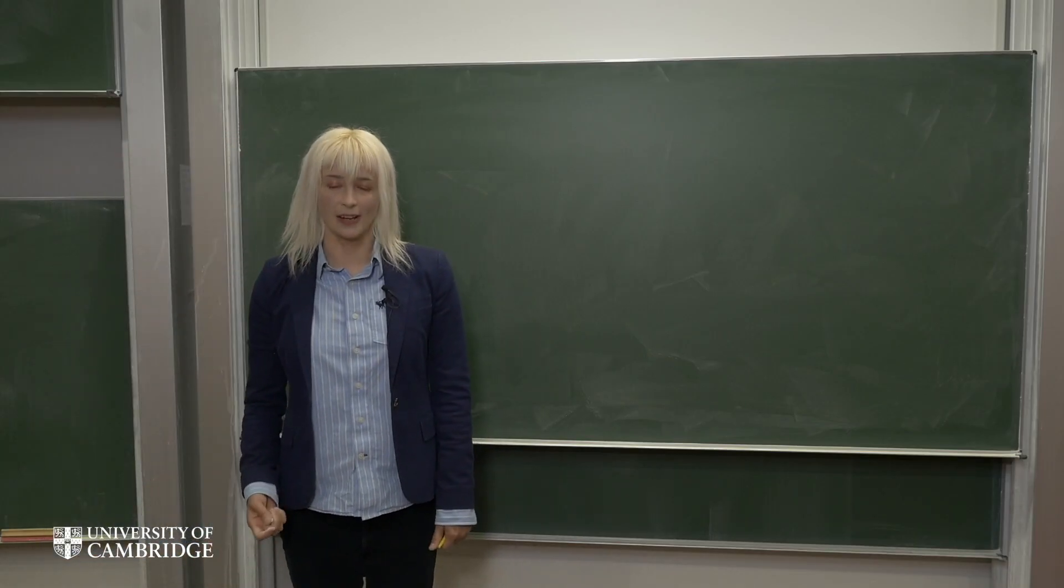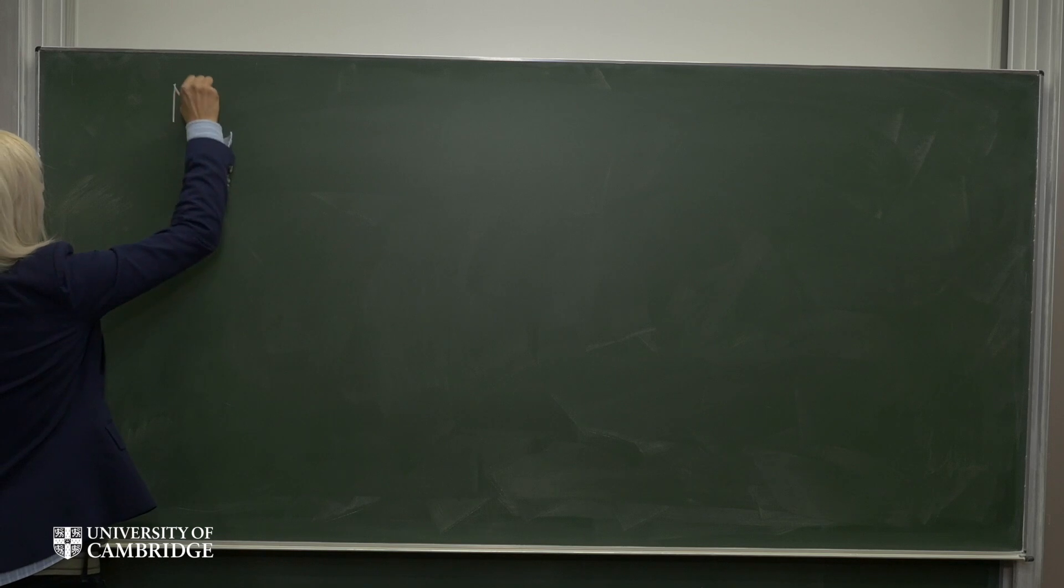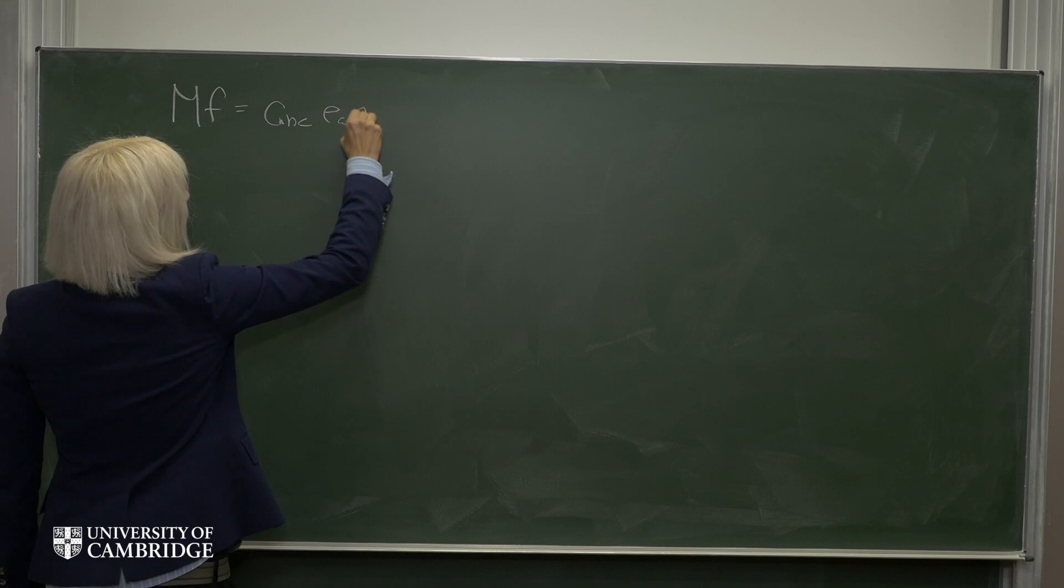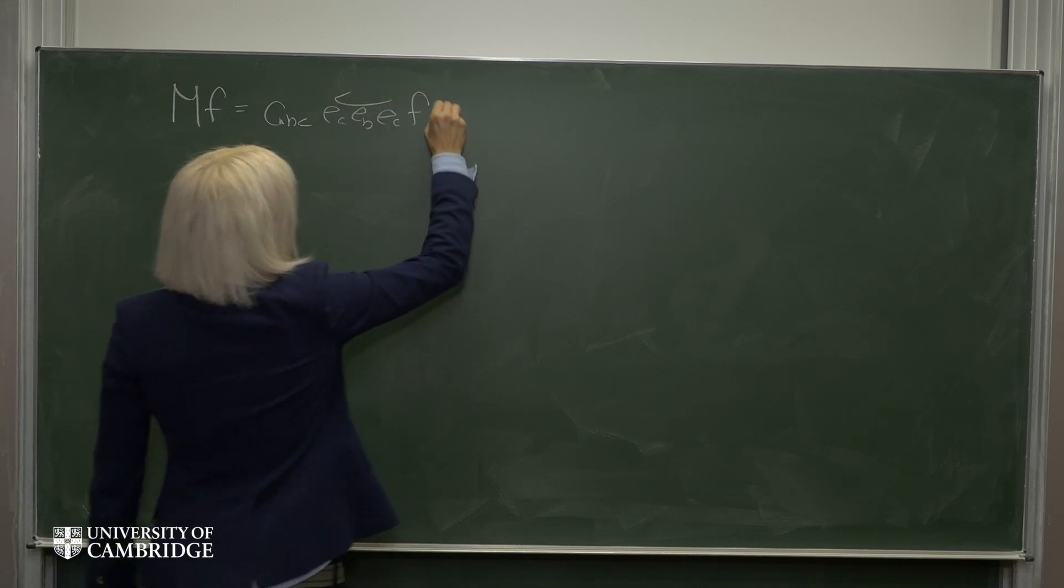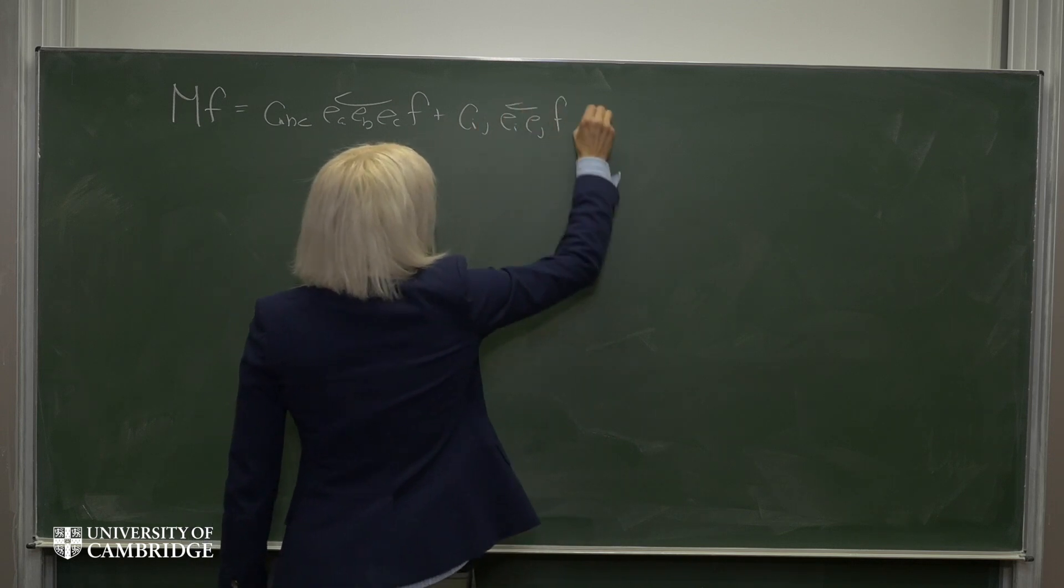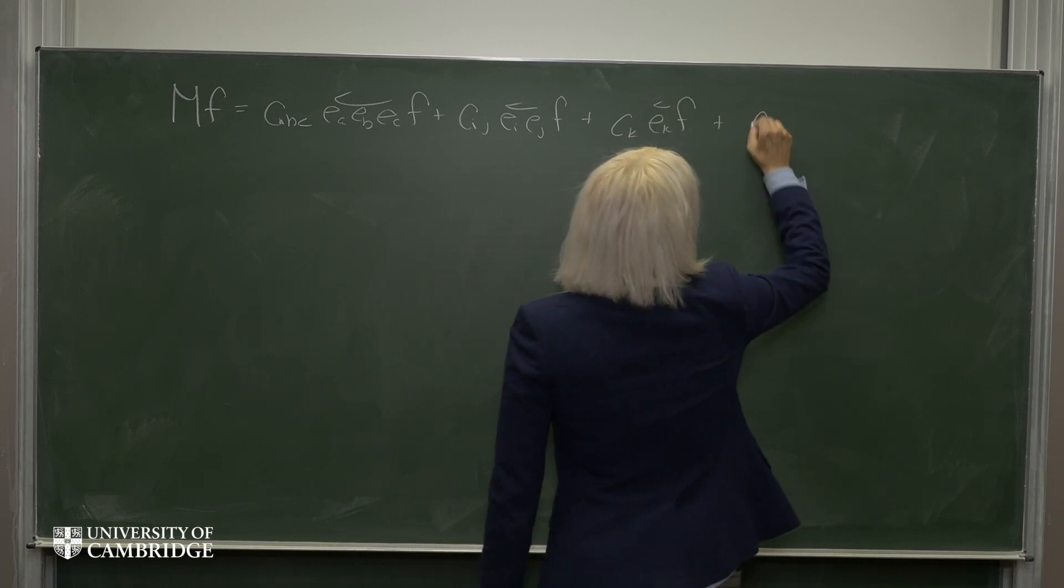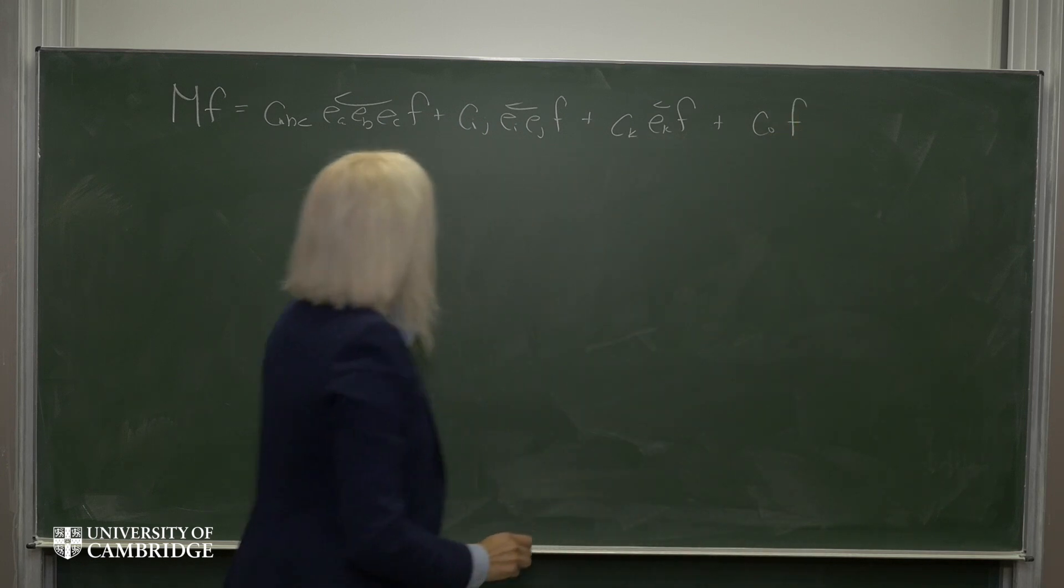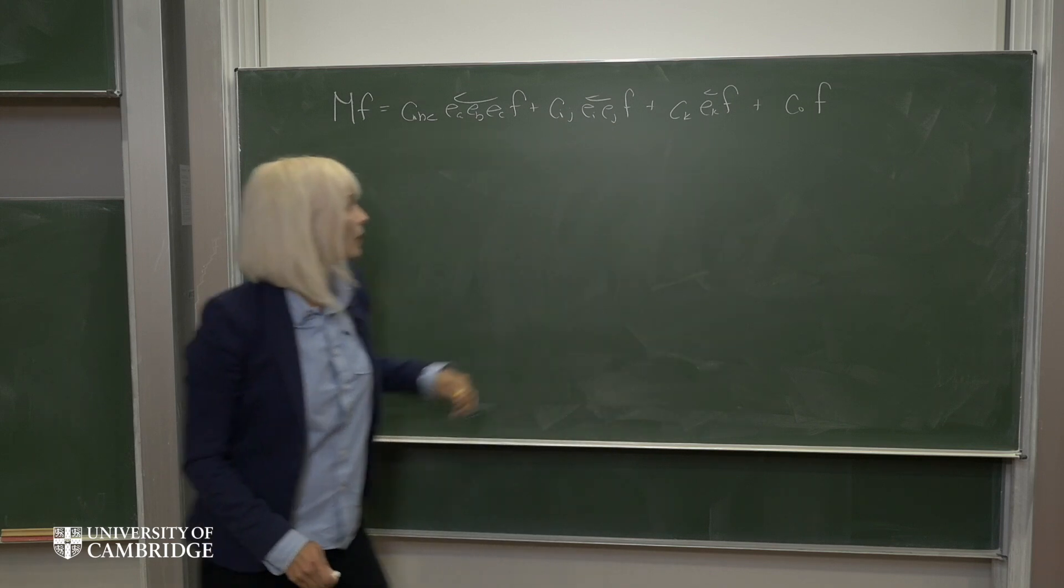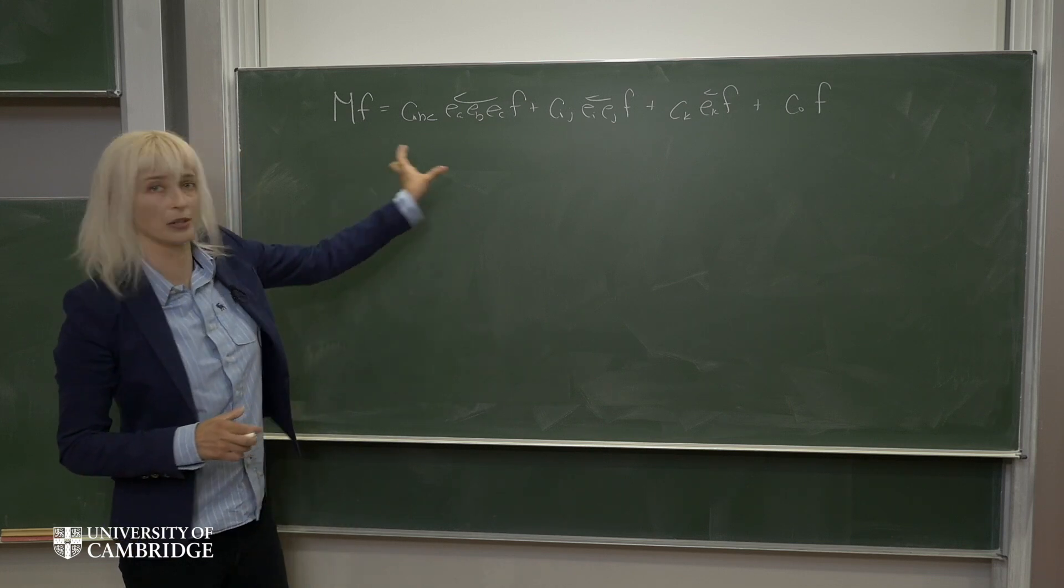Now it turns out that the most general left action map of the complex octonions on themselves looks like this. Where the c's here are just complex coefficients. Now this means that when we make chains of length four or greater, it means that we can always rewrite them in terms of shorter chains.